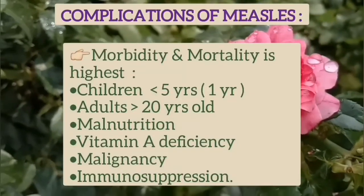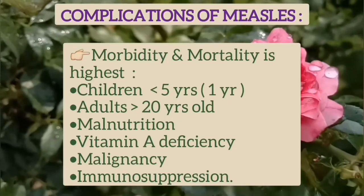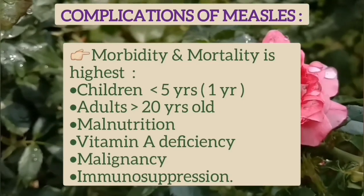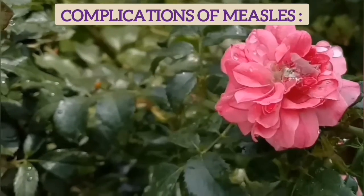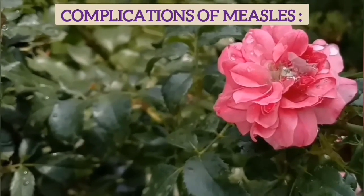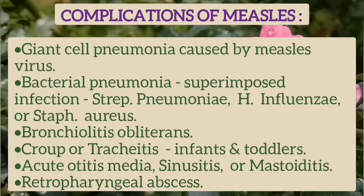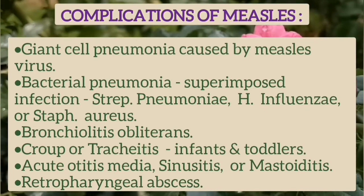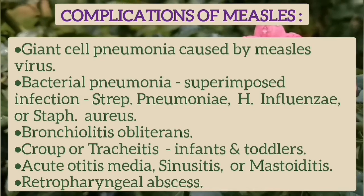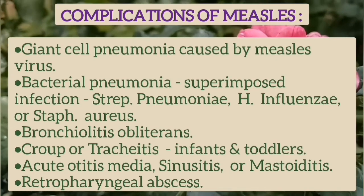Morbidity and mortality is highest in children less than 5 years, especially less than 1 year of age, and in adults more than 20 years old, and also in malnutrition, vitamin A deficiency, malignancy, and immunosuppression. Complications include giant cell pneumonia caused by measles virus, or bacterial pneumonia due to superimposed infection by Streptococcus pneumoniae, Haemophilus influenzae, or Staphylococcus aureus. There may also be bronchiolitis, croup, tracheitis, acute otitis media, sinusitis, mastoiditis, or retropharyngeal abscess.